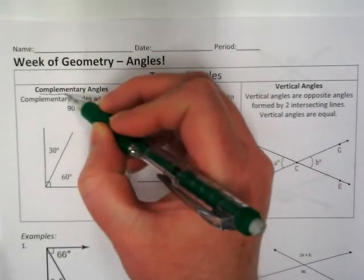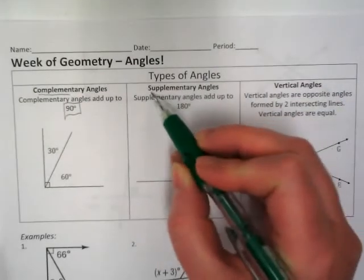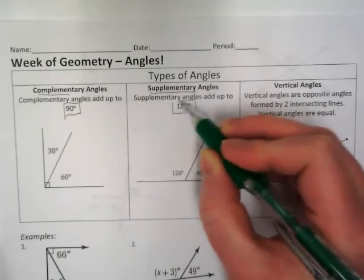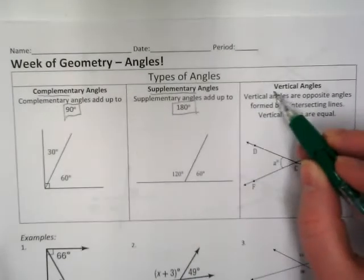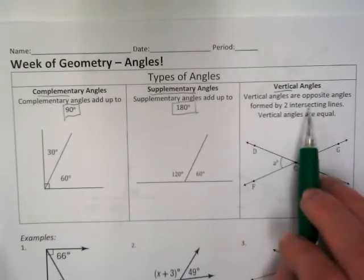There's complementary angles, and they equal 90 degrees. There's supplementary angles, and they equal 180 degrees. And vertical angles are angles that are opposite angles formed by an intersecting line.